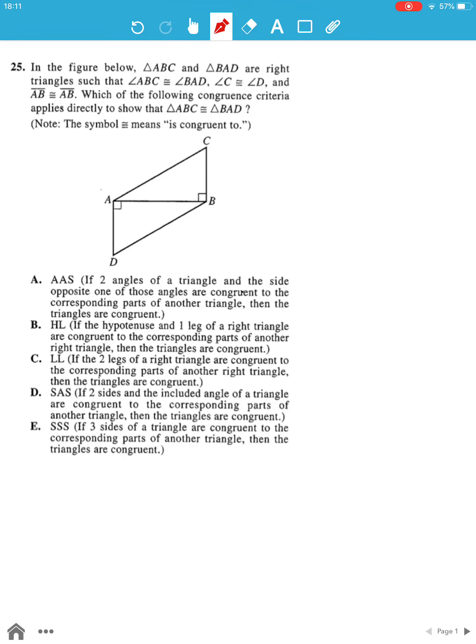For question number 25, we know that both triangles share a common side which is AB. Hence, AB is congruent to AB as given. Also, angle C is congruent to angle D.